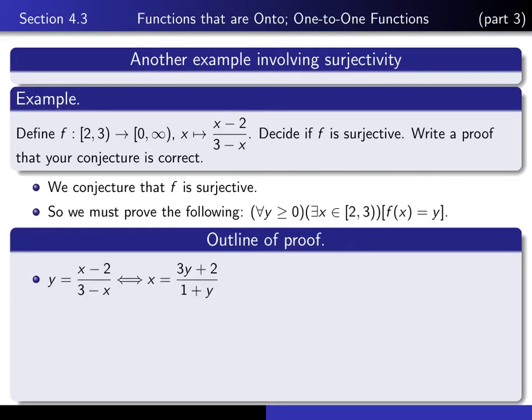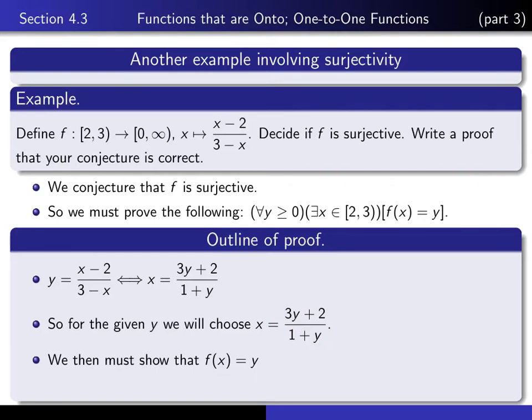Here's an outline of what we have to do to show that f is surjective. According to the calculation I did earlier, y equals this if and only if x equals this. This was what we got when we solved for x in terms of y. We're going to start the proof by giving ourselves a y, and then we're going to have to produce an x for which f of x equals y. So the x that we're going to choose is going to be this one.